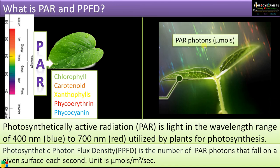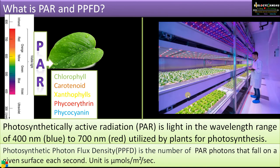Here is a leaf surface with PAR photons, or photosynthetically active photons, measured in micromoles, and area in meters squared. Therefore, the unit of PPFD is micromoles per meter squared per second. PPFD is an important indicator in indoor farming where artificial light is used.